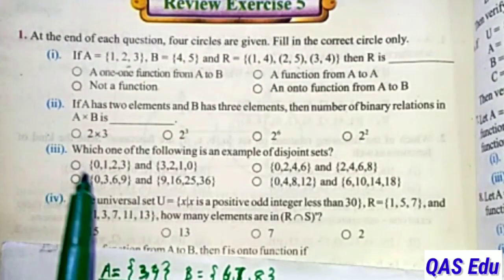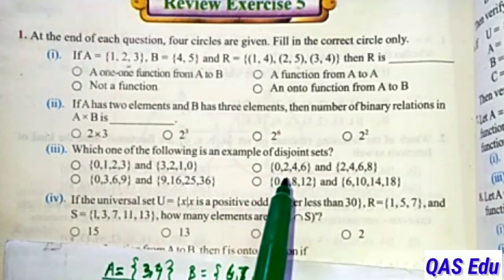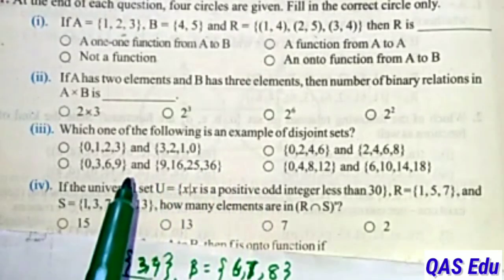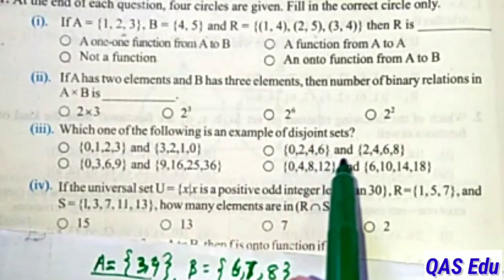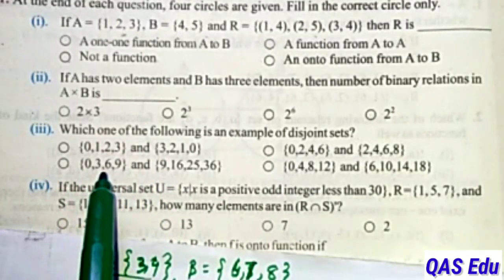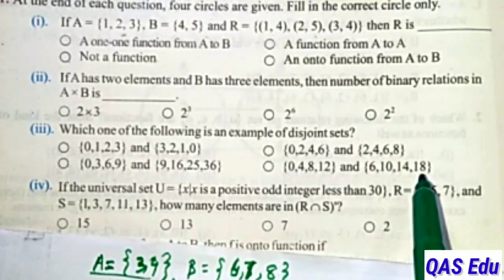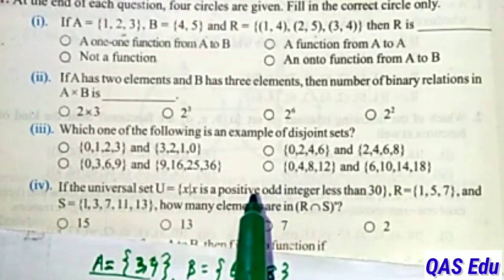Next MCQ: Which one of the following is an example of disjoint sets? Disjoint sets are sets with no common elements. Options: {0,1,2,3} - these have common elements. {0,2,4,6} and {2,4,6,8} - these have common elements, not disjoint. {0,3,6,9} and {9,16,25,36} - 9 is common, not disjoint. {0,4,12} and {6,10,14,18} - these have no common elements. The correct option is D. Fill that circle.